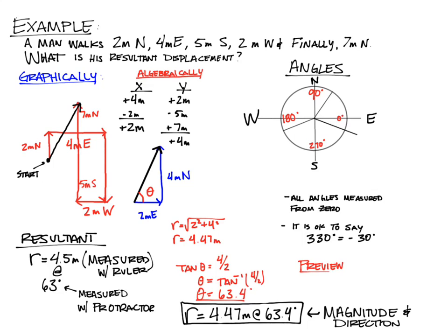As a preview for next time, we're going to talk about sine, cosine, and tangent. Sine is opposite over hypotenuse. Cosine is adjacent over hypotenuse. Tangent is opposite over adjacent. We'll talk about those tomorrow.